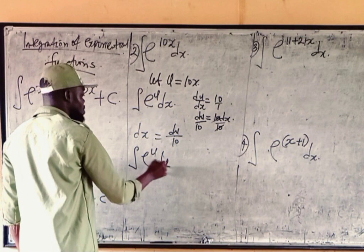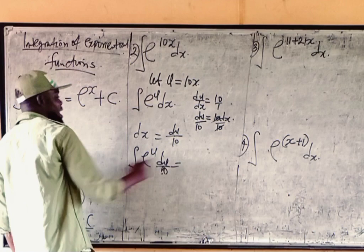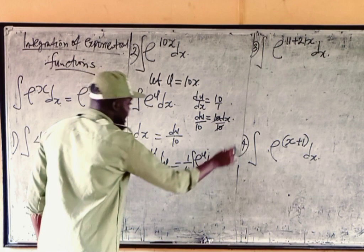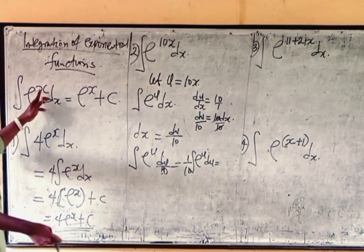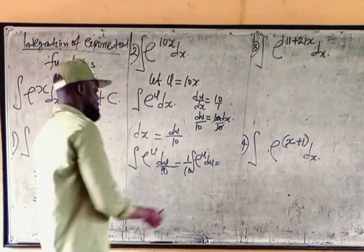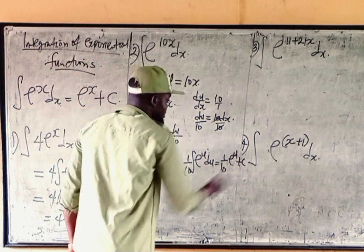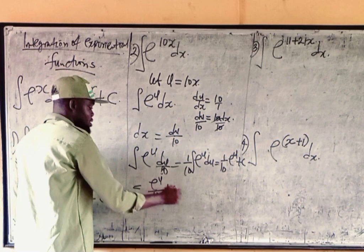That will be equal to... bring this 10 out. We're going to have 1 over 10 integral exponential u du. And if you integrate exponential u with respect to u, just as we said, if you integrate exponential x the answer will be exponential x plus c. If you integrate exponential u with respect to u, the answer will still be exponential u plus c. That will be 1 over 10 exponential u plus c. That will be exponential u over 10 plus c.